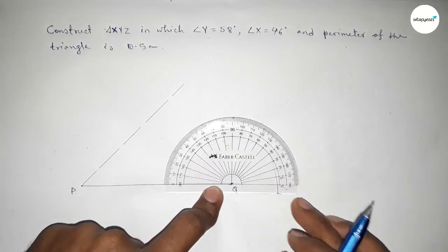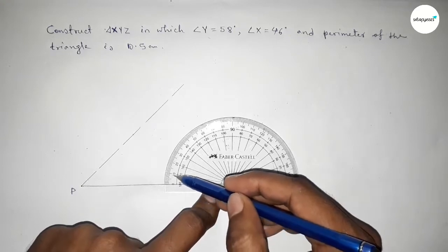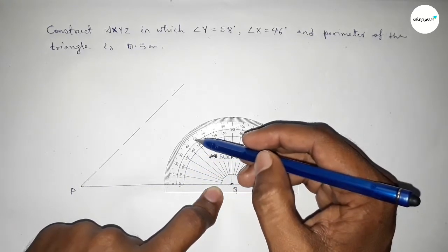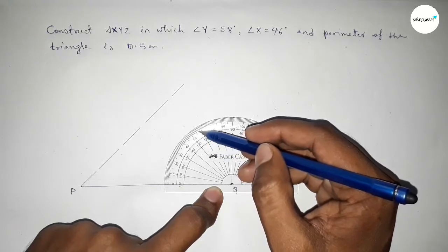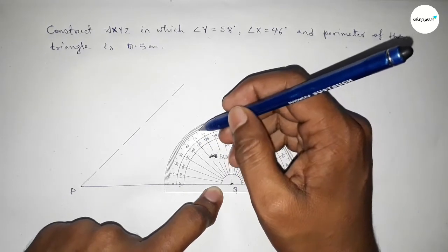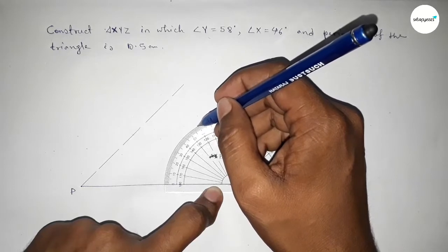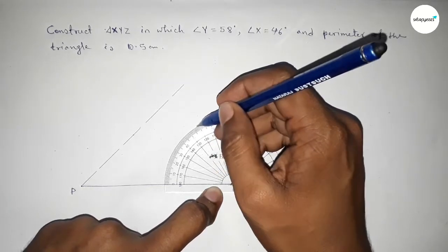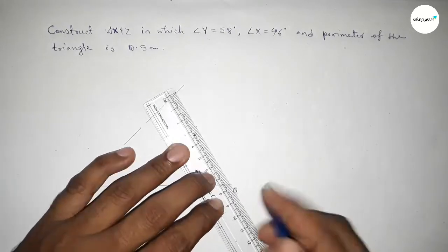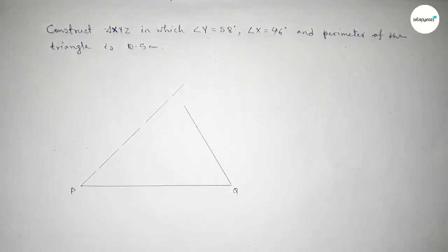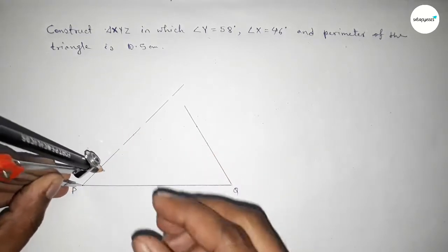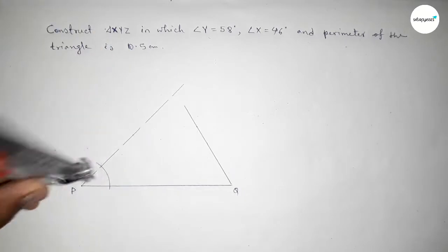Next we have to draw a 58 degree angle at point Q using the protractor. This is 55, 56, 57, 58 — so this is the 58 degree angle. Now joining this line. So next we have to bisect this angle first.